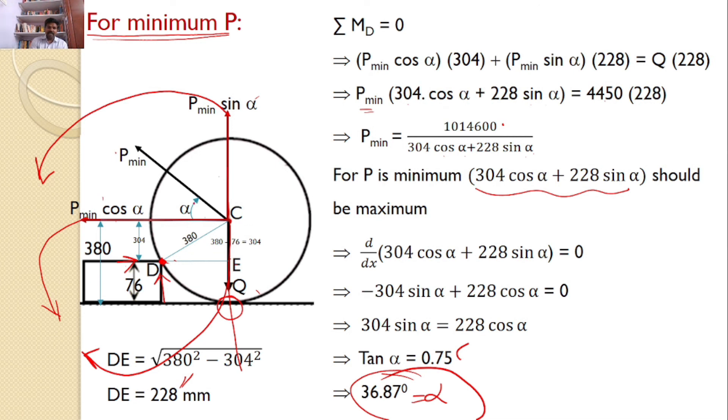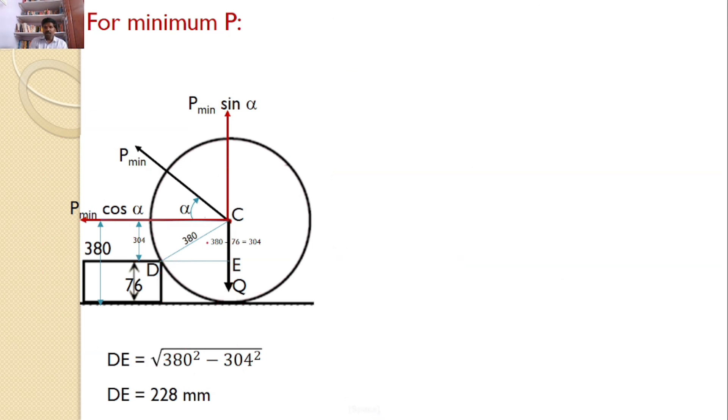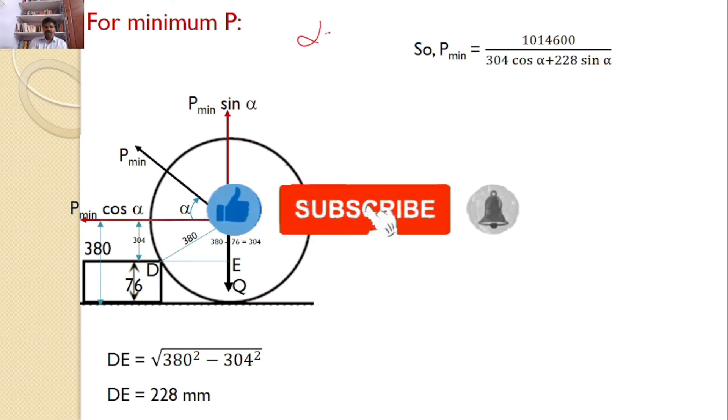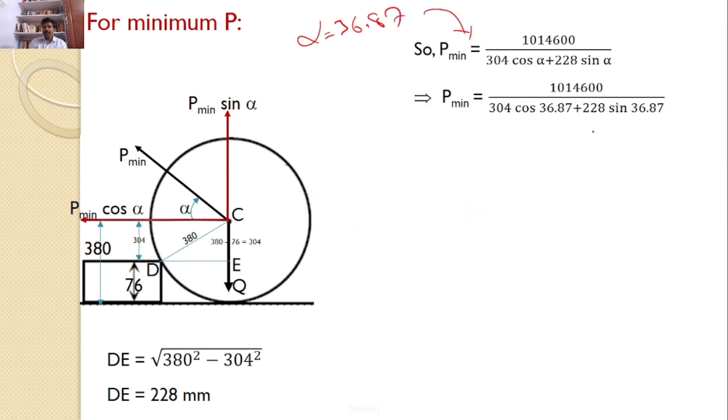So if you apply a force at an angle of 36.87 degrees, you will get the force is minimum. And how much is that minimum force? You just substitute in the equation, 1014600 by this denominator. I got alpha value is equal to 36.87. You substitute here. Then upon substituting, you will get the value 2670 Newtons. This is the answer.